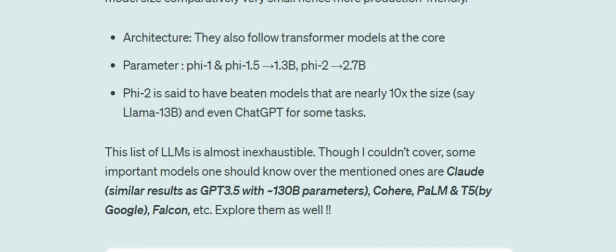Apart from these, there are other notable models I couldn't cover in depth — such as Claude, which gives results similar to GPT 3.5 with fewer parameters, as well as Cohere, PaLM and T5 by Google, and Falcon. I'd suggest experimenting with all these LLMs. With that, let's wrap it up.